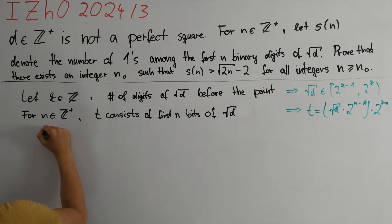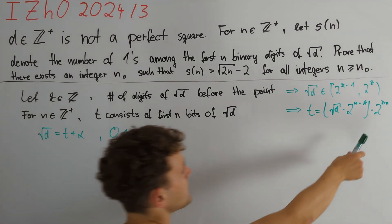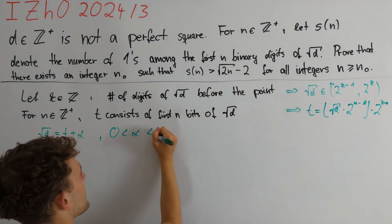The square root of d is equal to t plus alpha, where we know that since the square root of d is irrational, alpha is greater than 0 and it is also less than 2 to the power of k minus n.